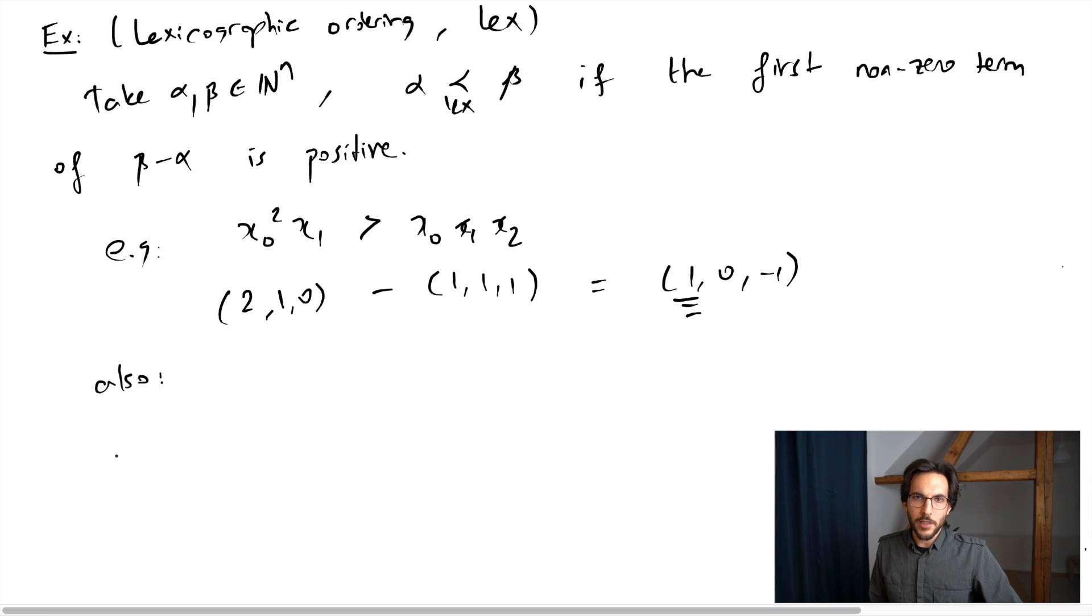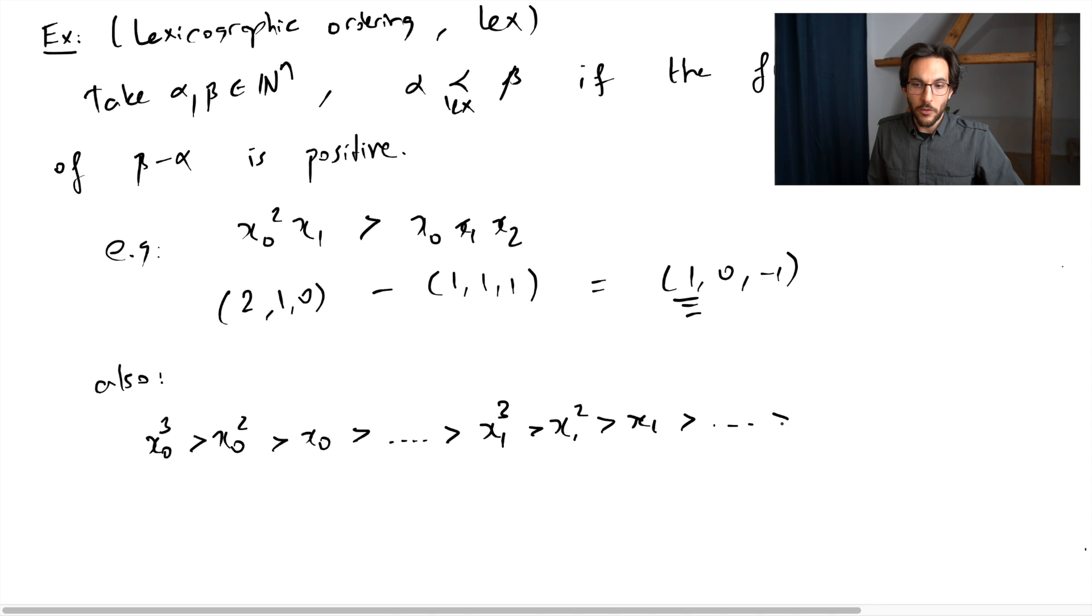But something interesting about lexicographic ordering is that it really very strongly prefers the first variables, even more so than degree. So what ends up happening is that if you start ordering, let's say x0 cube would be larger than x0 squared, for sure, and this would be greater than x0. But this x0 would beat any power of x1. For example, it would beat x1 cubed, x1 squared and so on. And x1 would beat any power of x2. So the lexicographic ordering does not care about the degree. It wants you to have as many of the first letters as possible—first letters, first variables.